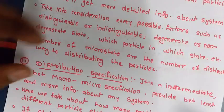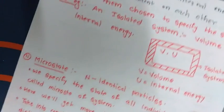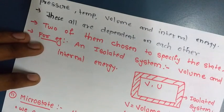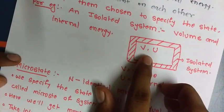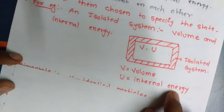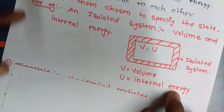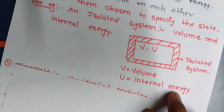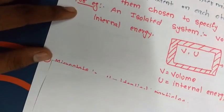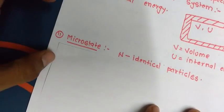For example, if you talk about an isolated system, temperature is not introduced, but this isolated system is described by the volume and internal energy. So basically, the macrostate is defined by the thermodynamic variables, which are nothing but pressure, temperature, volume, and internal energy.